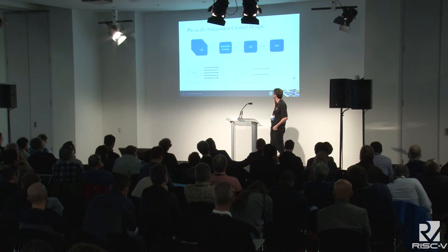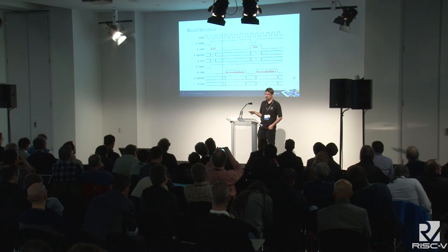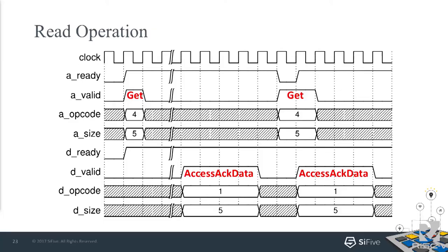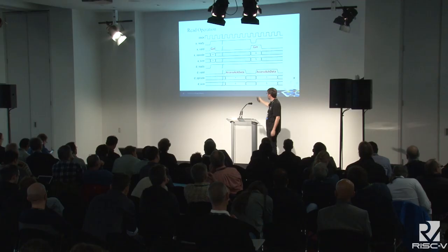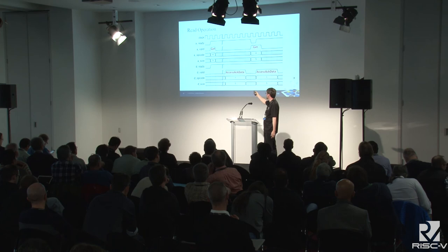Here's a quick waveform to show how this works. You've got ready-valid with a get message. The access-ack-data can come back arbitrarily delayed from the get — the only requirement is that it makes forward progress, so you will get an answer eventually. But conversely, you can get the answer back immediately. The first time you tried to send the get, the ready was low so it got retried. But the get got its response on the same cycle. The opcode encodes what the message type is, and the size says how big the block is.